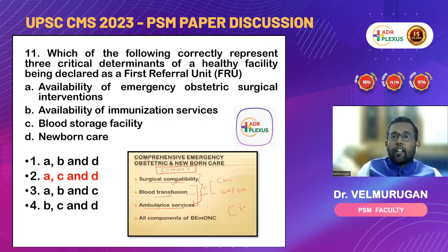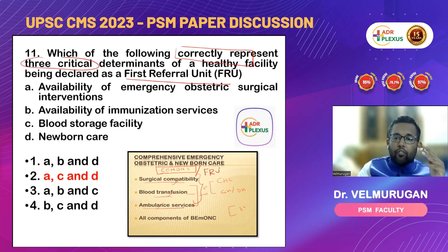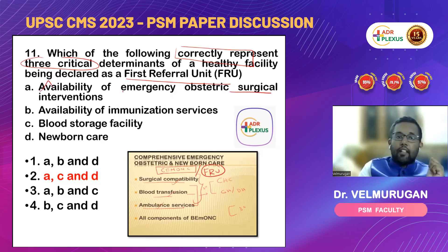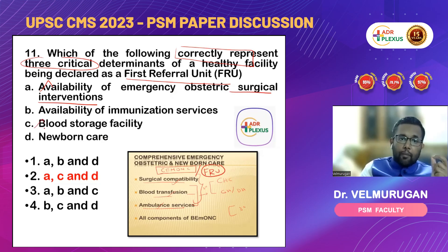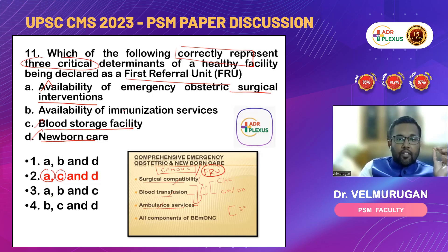Next question: which of the following correctly represent the three critical determinants to be declared as a First Referral Unit (FRU)? As discussed in the video regarding CMONC or FRU: mainly surgical facilities should be present, blood storage facility should be there, and there should be newborn care — neonatal intensive care units. So the answer is A, C, and D, since option B is already commonly available.